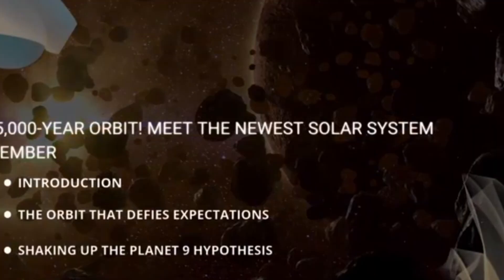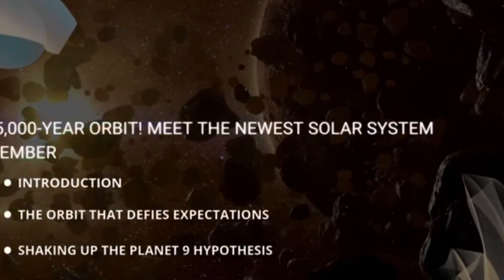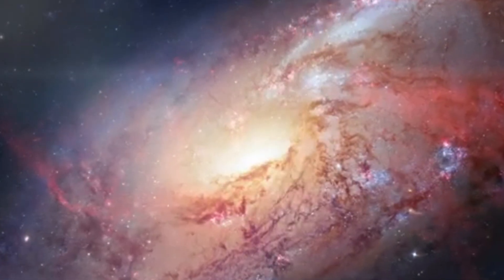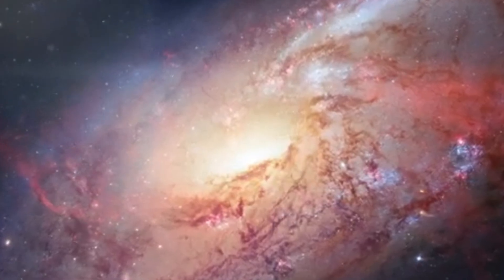And just to remind you, the length of an astronomical unit is equal to the average distance between the Earth and the Sun, around 150 million kilometers.